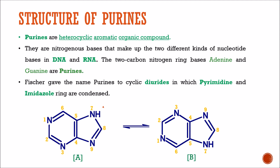Fischer gave the name purines to cyclic diureides in which pyrimidine and imidazole rings are condensed. In this structure of purine, there are two ring structures present. One ring is a six-membered pyrimidine ring, while another five-membered ring is known as imidazole in heterocyclic chemistry. So the structure of purine is a fusion of a six-membered pyrimidine ring and a five-membered imidazole ring.